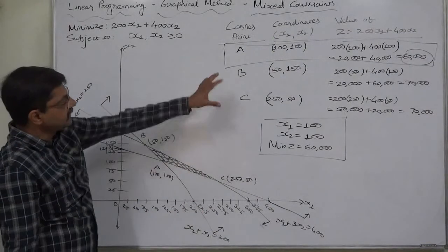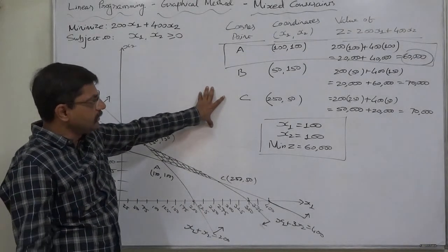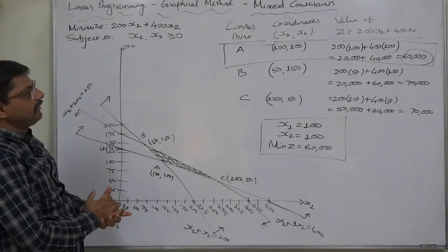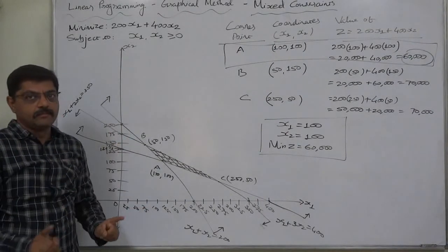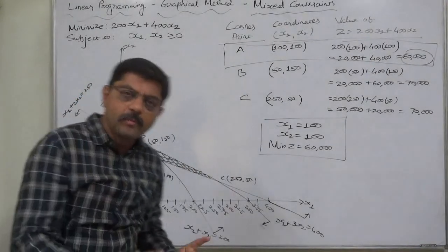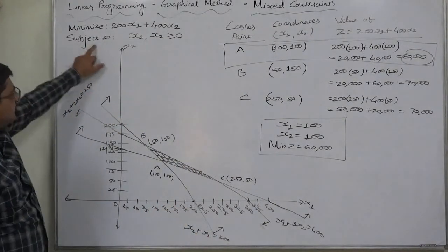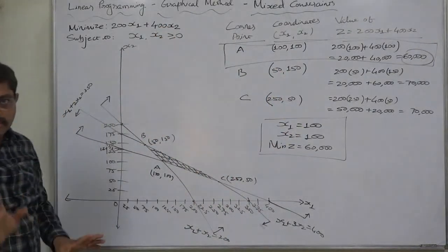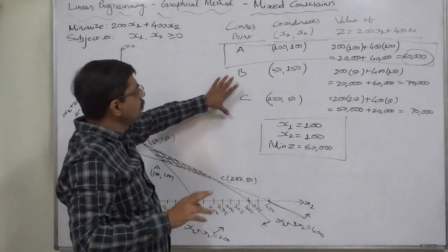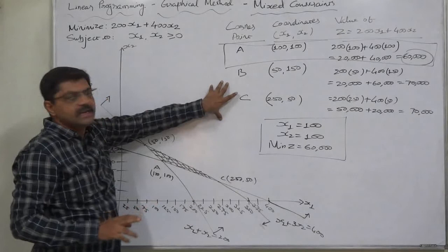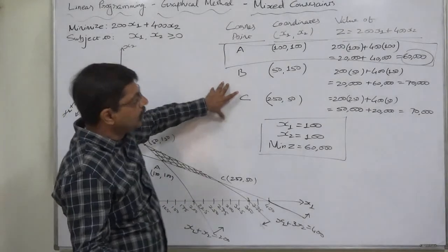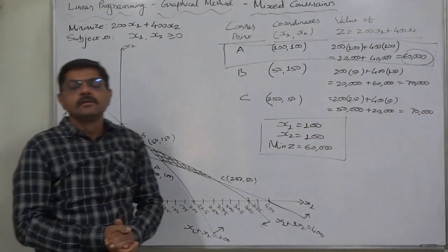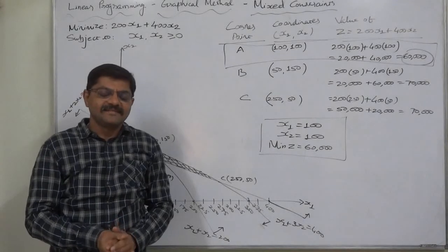The optimal solution is x1 = 100, x2 = 100, and minimum Z = 60,000, lying at corner point A of the feasible region. This example could have multiple optimal solutions only if the objective were maximization — since B and C both give Z = 70,000. But as a minimization problem, this is not a case of multiple optimal solutions. Thank you very much.